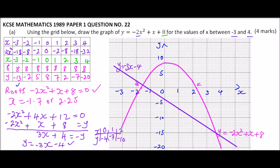We read the points where the quadratic graph and the linear graph intersect. Those intersection points give the roots of -2x² + 4x + 12 = 0, which are approximately x = -1.6 and x = 3.6. That's how you work out this question — it takes some time but is worth 10 marks. Thank you for watching.